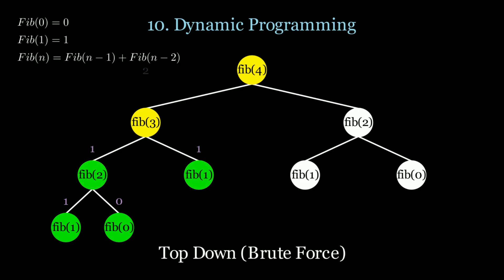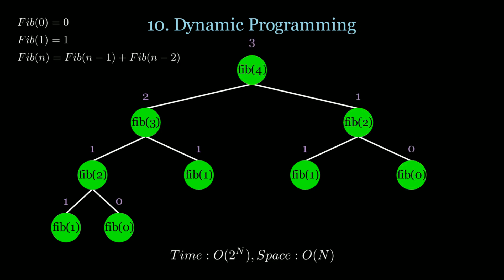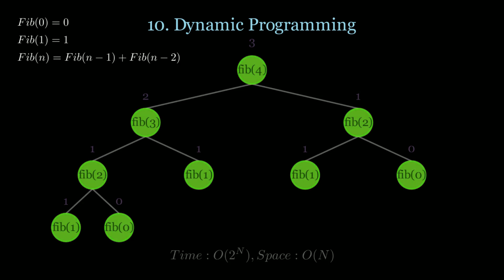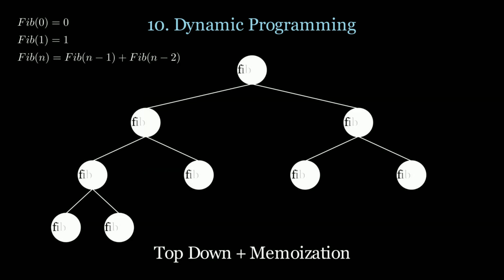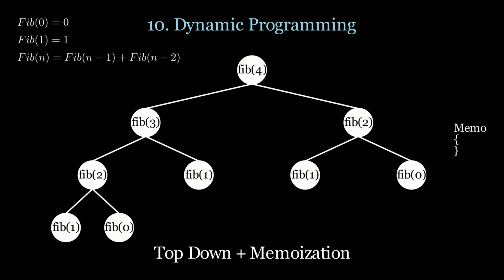Notice that we're going to be solving Fibonacci of 1 and Fibonacci of 2 twice — we redo repetitive work. Therefore the time complexity is O(2^n) and O(n) space. Can we do better? Yes, we can. We could look at a top-down approach with memoization, which just means storing subsequent results in a hash map called memo.